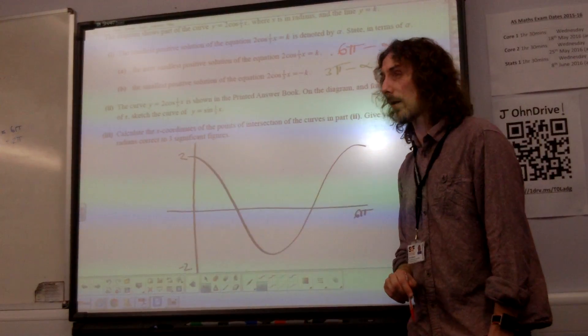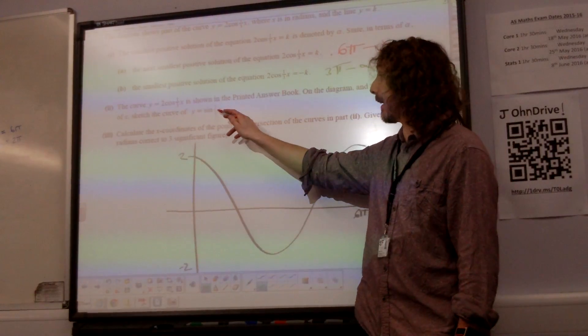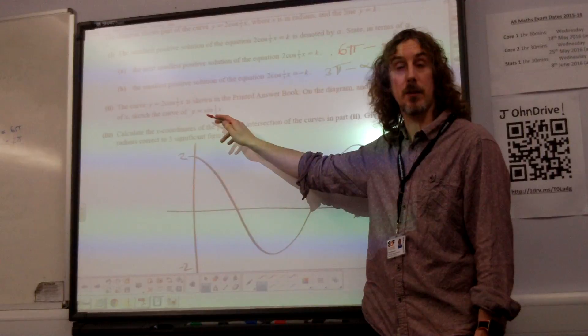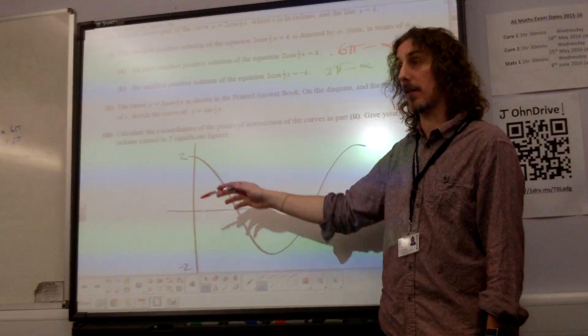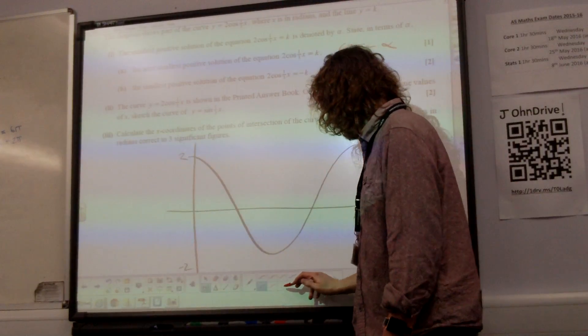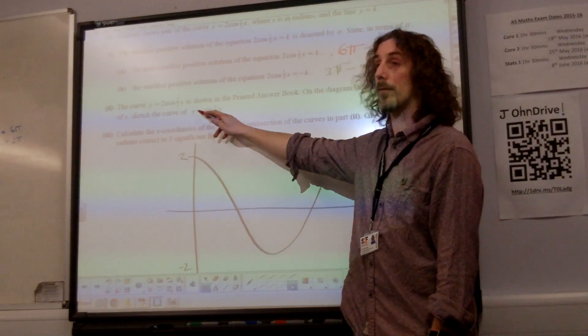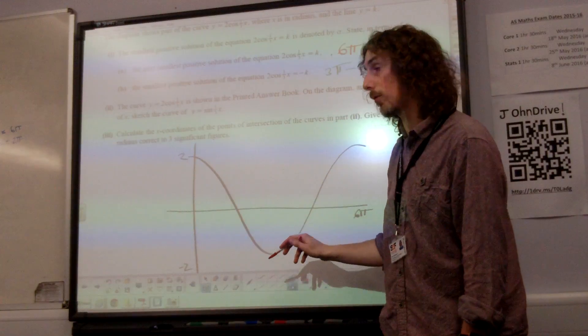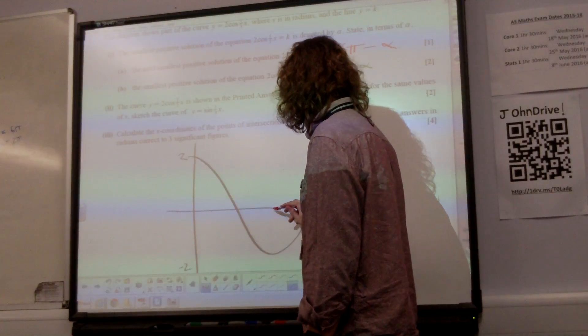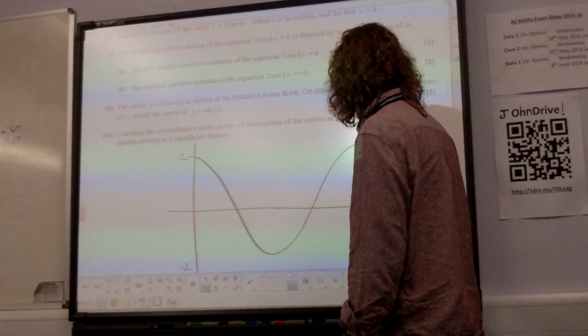We're going to draw a sine graph. Now the sine graph has the same stretch applied to it. So it's got the same period, hasn't it? Its complete cycle is the same distance. The difference is it doesn't have the 2 in front of it. So it's not going as high up and as low down. So we're going to draw a sine graph. There's a midpoint, isn't it? And there's 6 pi.